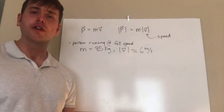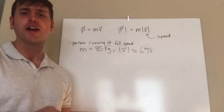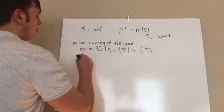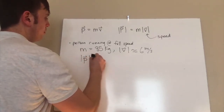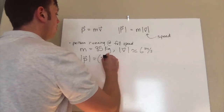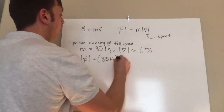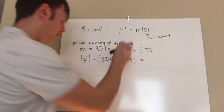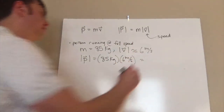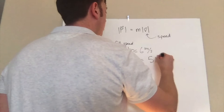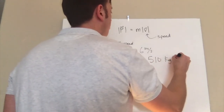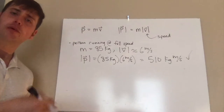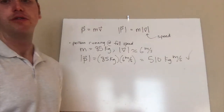For a person running at full speed, the magnitude of momentum is 85 kilograms multiplied by 6 meters per second, which gives about 510 kilograms meters per second. You should be getting a couple hundred, depending on what numbers you used.